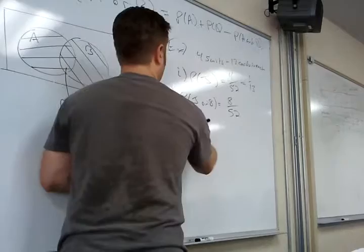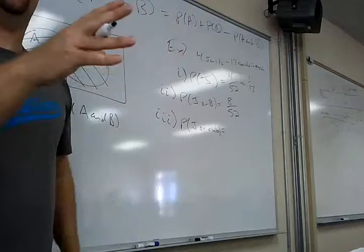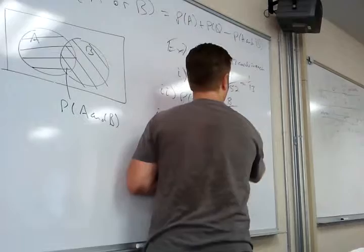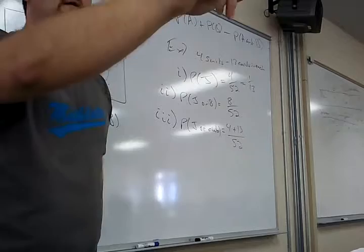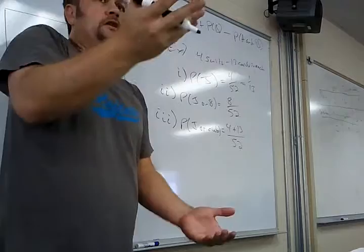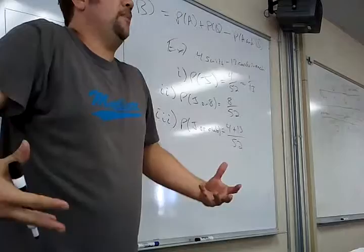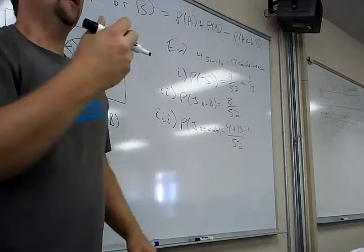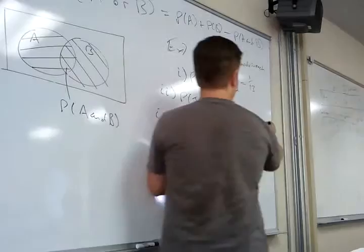So four plus thirteen minus one = 16 out of 52. Or just do four plus twelve — there are 12 other clubs I haven't counted yet. That gives 16 out of 52. Why didn't I have to subtract anything for jack or eight? Because hopefully there are no jacks that are also eights — no card is both, so there's nothing to subtract.